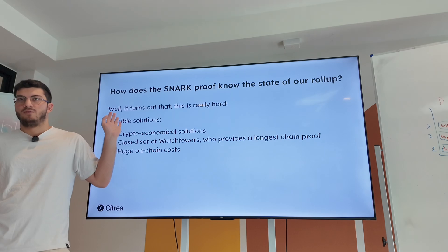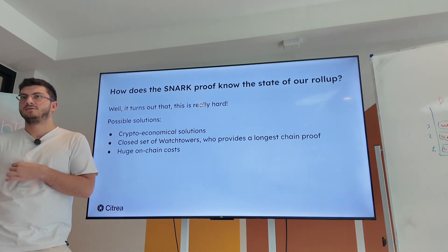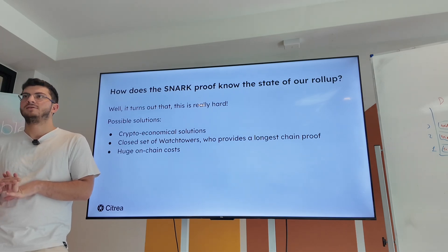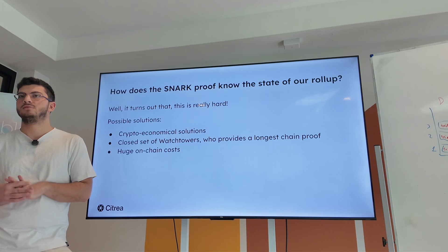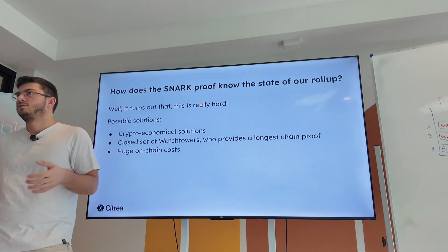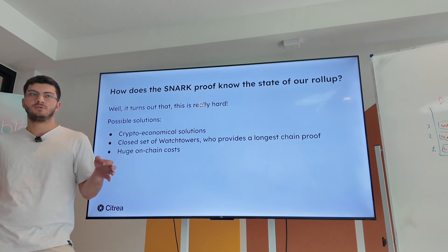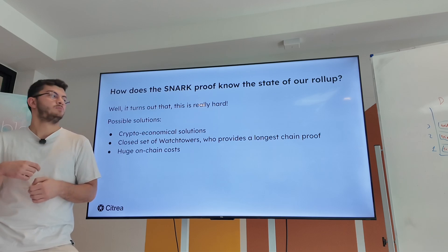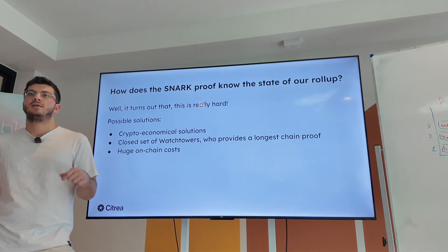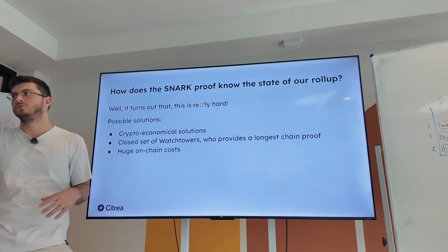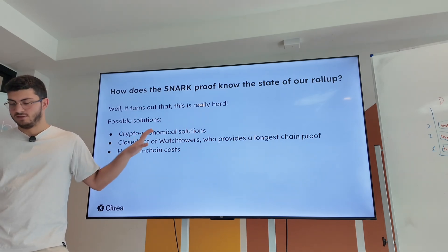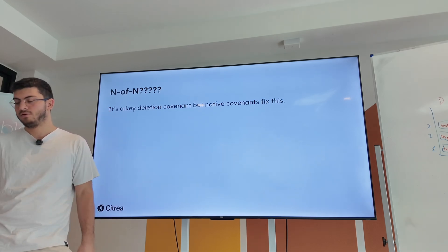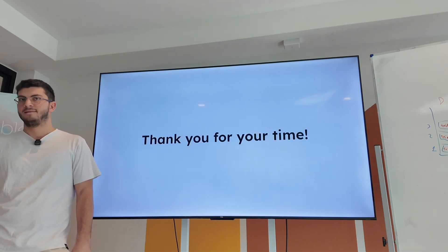How does the SNARK proof know the rollup state? This is called the Bitcoin lite client design problem. There are some solutions — Robin's paper has a crypto-economic solution; there are permissioned solutions with 100 watchtowers each putting a longest-chain proof, like an interactive challenge-response where the operator must post a longer chain than the watchtower's challenge. Or it can be solved with huge on-chain costs. As for who the N-of-N is — if we had covenants on Bitcoin, it would solve this problem.